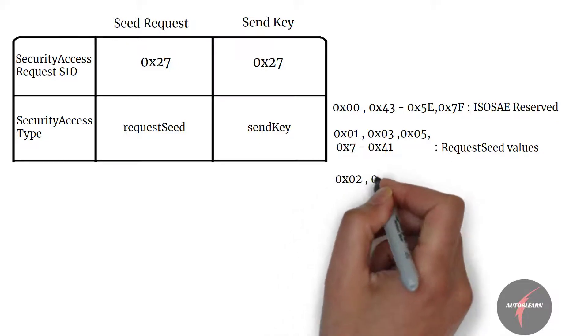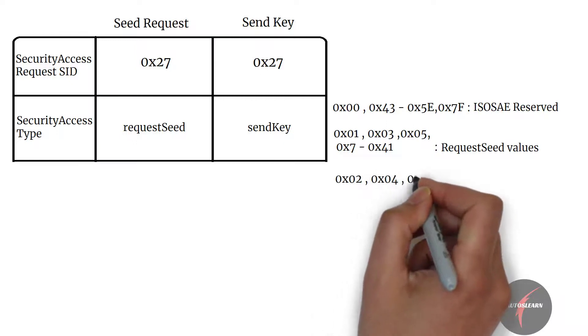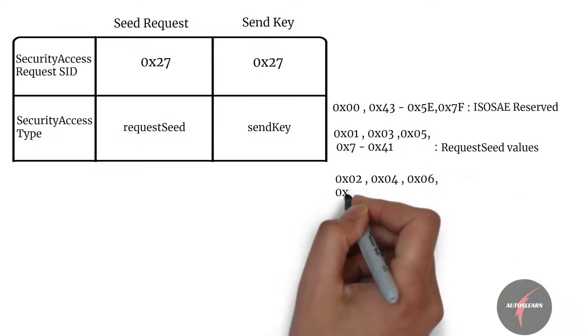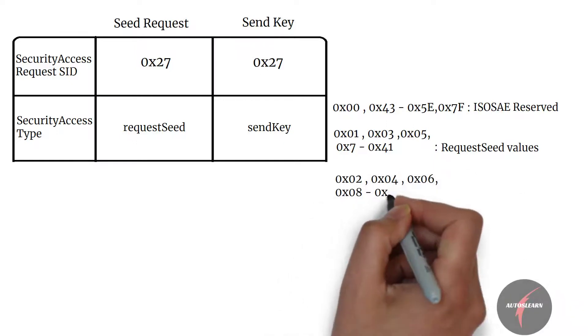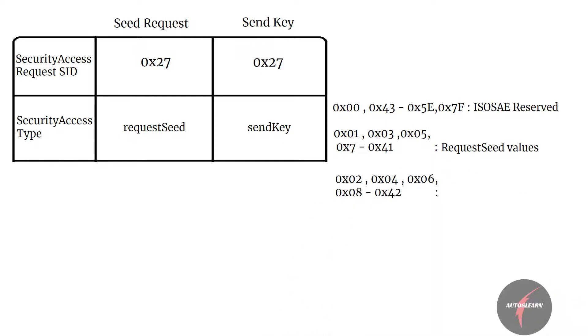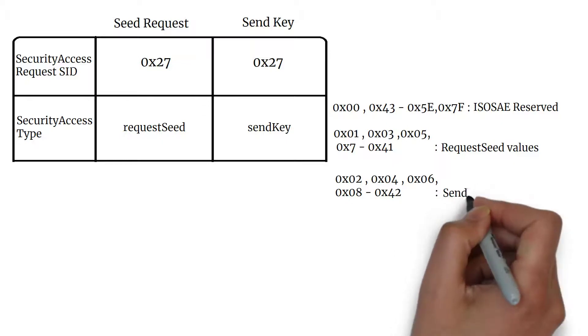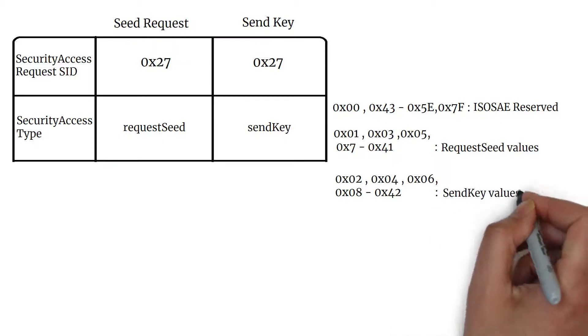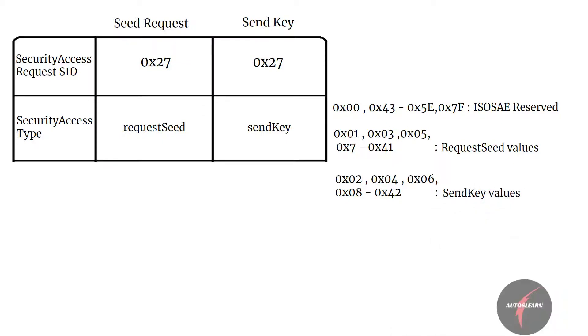Values 2, 4, 6, and from 8 to 42 — these values are meant for send key with different levels of security defined by the vehicle manufacturer.